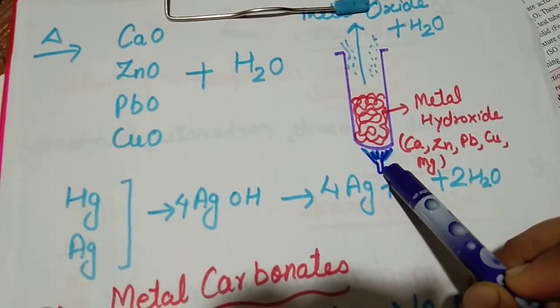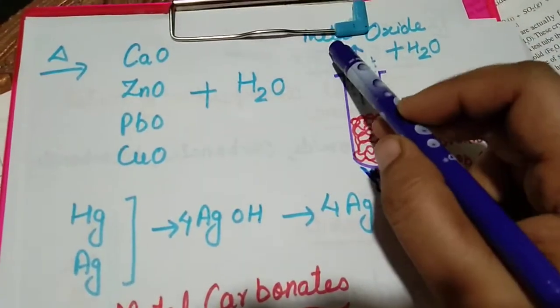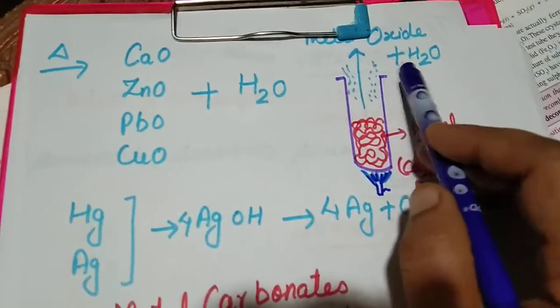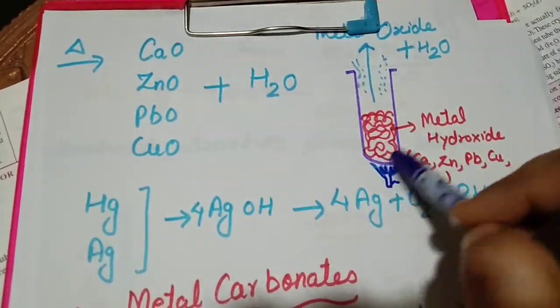Then heat it with the help of Bunsen burner. Here we are getting metal oxide and water. This is a rough diagram just to demonstrate what we are speaking.